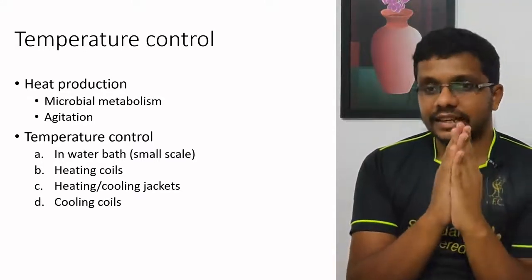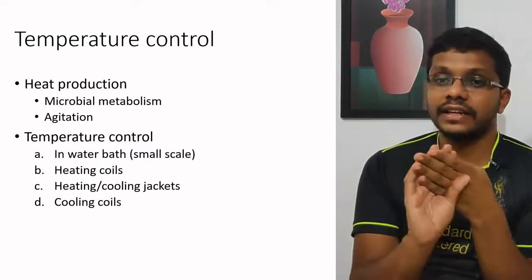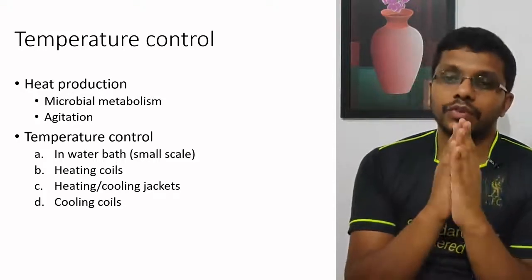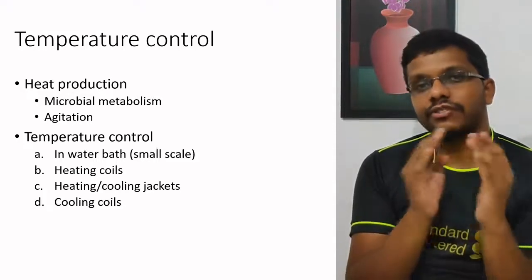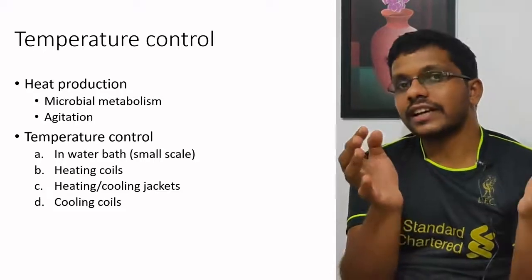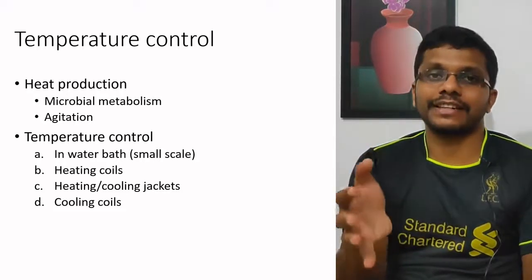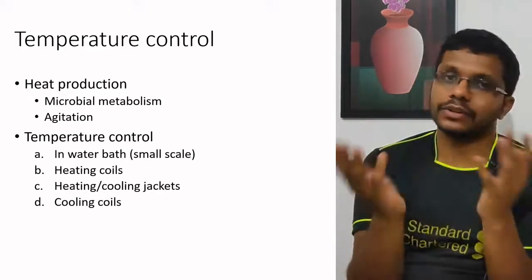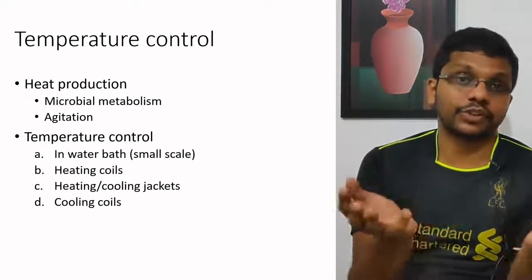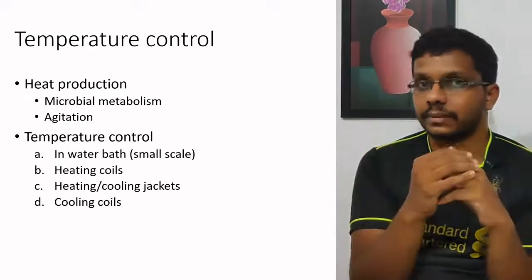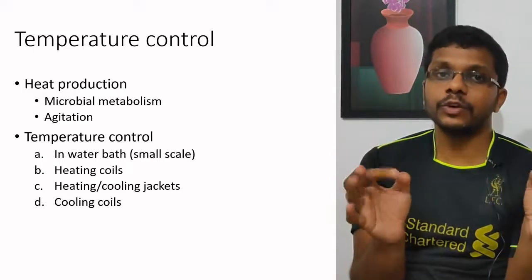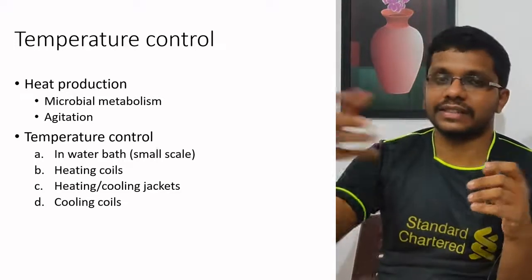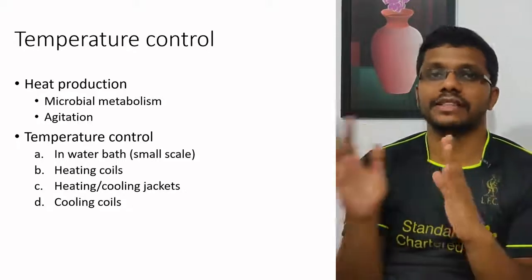Generally, we can use four different methods to control temperature. The first is the water bath method. If our fermenter is very small, we can put the fermenter in a water bath to control temperature — either increasing or decreasing it. Based on the temperature of the water bath, we can control the fermenter temperature. This is applicable only to very small scale fermenters, just like placing conical flasks in a water bath.